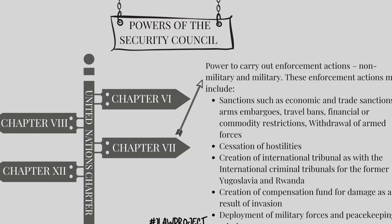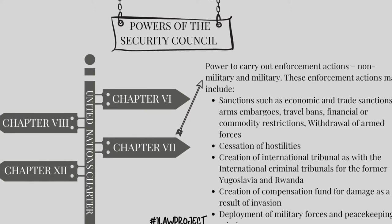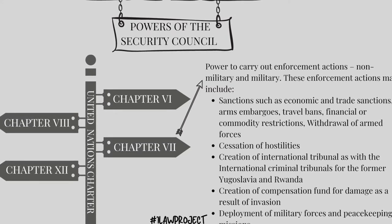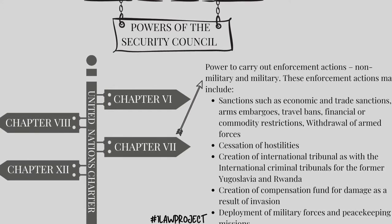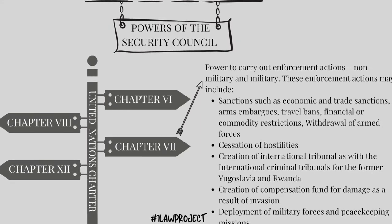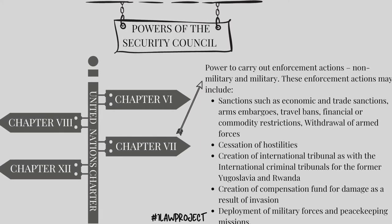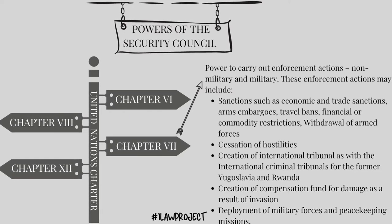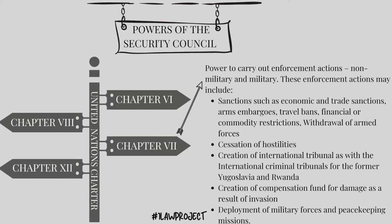These enforcement actions may include sanctions such as economic and trade sanctions, arms embargo, travel bans, financial or commodity restrictions, withdrawal of armed forces, cessation of hostilities, creation of international tribunals — as we saw with the international criminal tribunals for the former Yugoslavia and Rwanda — creation of a compensation fund for damage as a result of invasion, and deployment of military forces and peacekeeping missions.